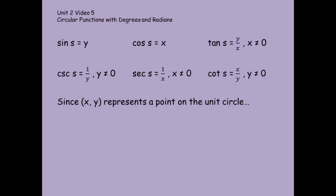So let's go ahead and define our six trig functions. The sine of s, and s is representing an angle here, it doesn't matter whether it's measured in degrees or radians, the sine of an angle is equal to y. The cosine of an angle is equal to x. The tangent of an angle is equal to the ratio of y over x, where x cannot be 0.